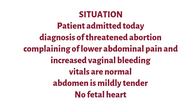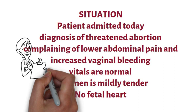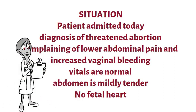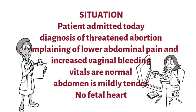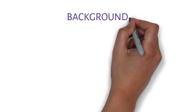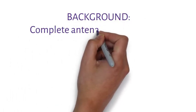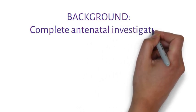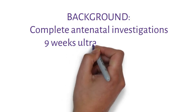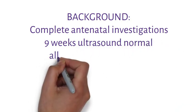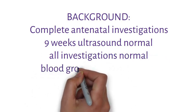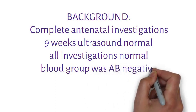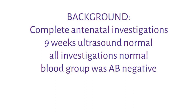The vitals are normal and the lower abdomen is mildly tender. The fetal heart cannot be heard on the ward with the Doppler and the cervical os is closed on vaginal examination. For the Background, the patient was prescribed local and oral progestogen and has only had one dose so far after admission. Her complete antenatal investigations were done at nine weeks and everything was normal. Her blood group is AB negative. She is very anxious, in some pain, and wants to talk to her husband.